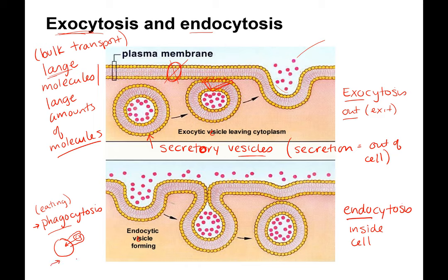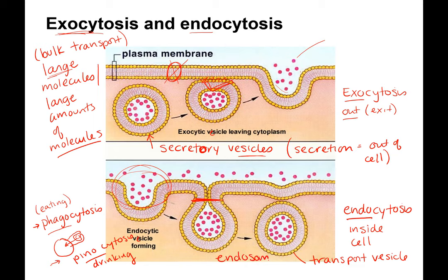There's also pinocytosis, which is like drinking. Sometimes a cell will bring in a large mass of fluid that's outside and whatever is dissolved in that fluid. You can see this idea of the membranes pinching in — here's the cell membrane grabbing all this material, it's pinching in, and then it pinches off into another transport vesicle. These are also called endosomes, and we're going to get into all of this more later.